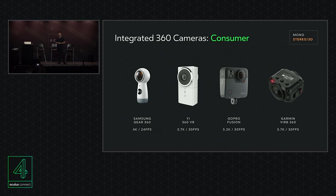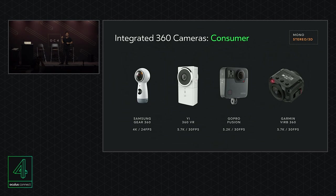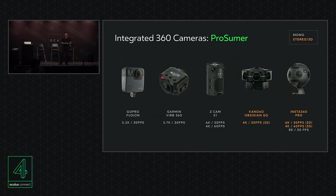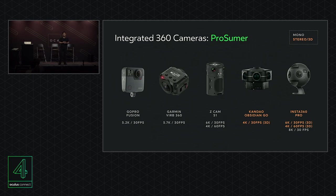On the consumer front, just this year consumer 360 cameras are finally able to capture beyond 4K at 30 frames per second. Prices range from around $170 to $800, and three of these cameras output fairly high-quality video at 5.2 to 5.7K. Two of them — the Yi and the Garmin — can also stitch in-camera at 4K and stream to Facebook Live. Prosumer cameras in this list range from around $700 to $3,500 and are improving dramatically in image quality and stereo capture. The Z Cam S1, shooting at 6K at 30fps for around $2,000, has become a workhorse in the 360 video industry for mono capture.